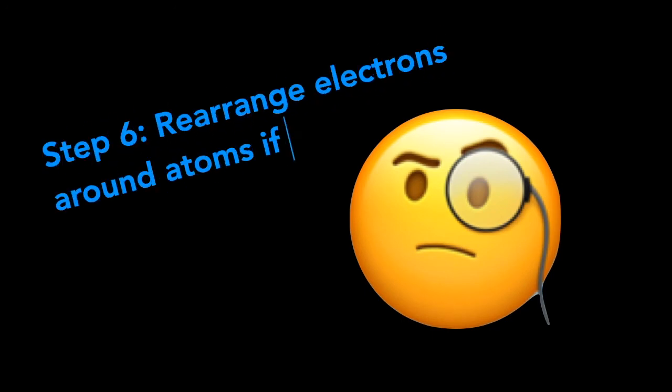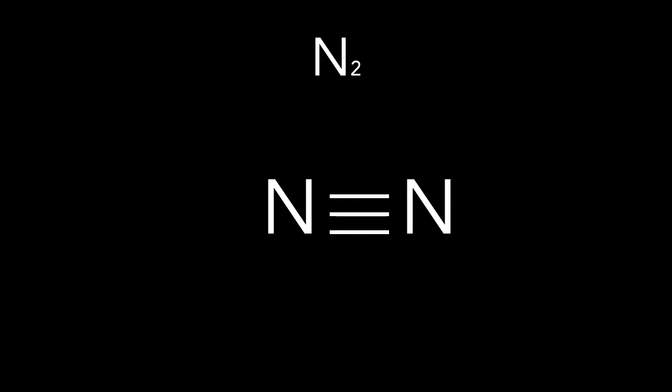The last and final step — step six: rearrange electrons around atoms if needed. Rearranging the electrons now gives eight valence electrons on both nitrogens, making this the correct Lewis dot structure for N2.